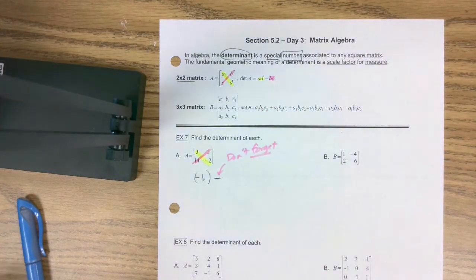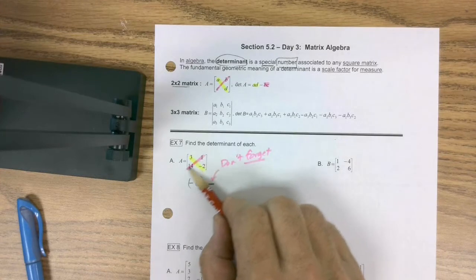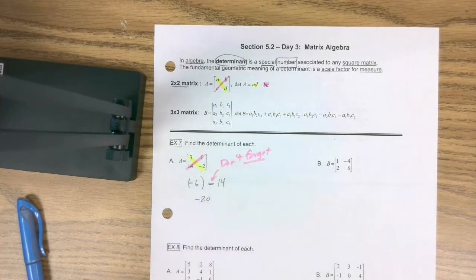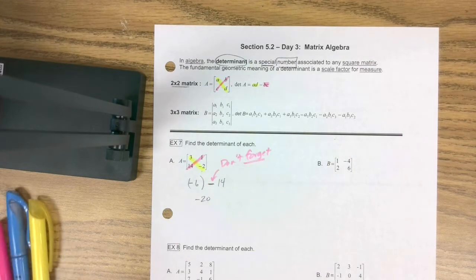So what do we get when we multiply that way? Well, we get 14. What's the special number? Negative 20. What does it do for us? Nothing today. When we start looking at Kramer's rule, then it will be our key that unlocks the door to these mathematical truths.